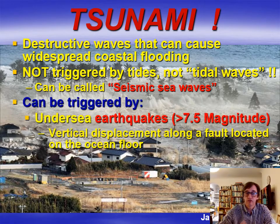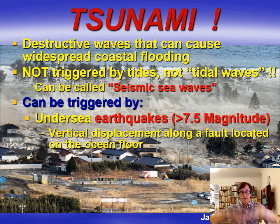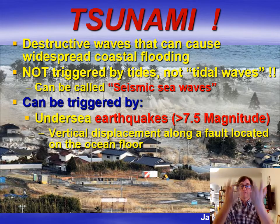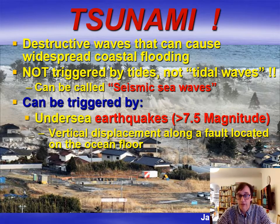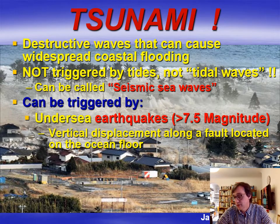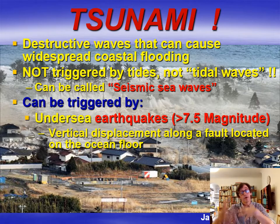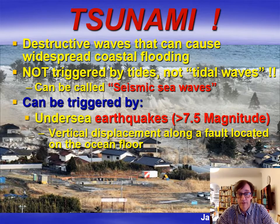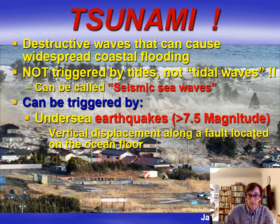They can be triggered by a seabed earthquake causing vertical displacement — or sometimes downward displacement — but generally the seabed has to be displaced upwards to move that water body. You need a lot of displacement, which is why you need a very high magnitude earthquake for large amplitude tsunamis — typically greater than 7.5 magnitude. Very large earthquakes, which is why tsunamis aren't that common. Vertical displacement along faults located on the ocean floor is where it happens.